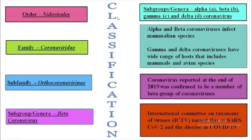Here is the classification. SARS-CoV-2 order is Nidovirales. Family is Coronaviridae. Subfamily is Orthocoronavirinae. And subgroup or genera is beta coronavirus. Generally, the coronavirus family has various subgroups or genera: alpha, beta, gamma, and delta coronavirus.